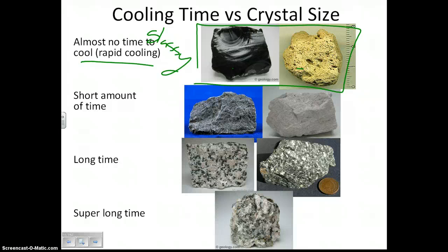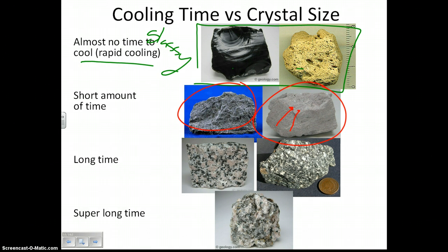Let's say we give igneous rocks a little bit more time to cool. So the magma or the lava, instead of cooling really quickly at Earth's surface, is buried deep underground and starts to have a little more time to cool. These rocks still don't have big crystals, but you're starting to see them — there are very small crystals. If you had a hand lens, a magnifying glass, you could see a couple of crystals, but they're very small. We refer to these as fine-grained because fine means small.